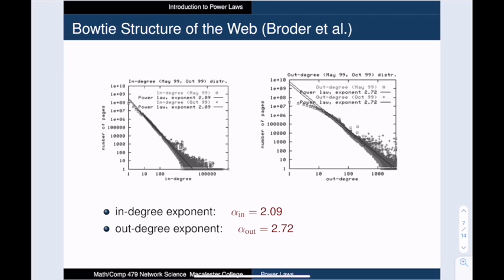Also, we note that the power law exponent is different for the in-degree versus the out-degree. For in-degree, the exponent is 2.09.